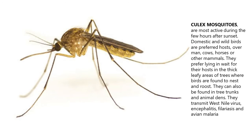Culex mosquitoes are most active during the few hours after sunset. Domestic and wild birds are preferred hosts over man, cows, horses, or other mammals. They prefer lying in wait for their hosts in the thick leafy areas of trees where birds are found to nest and roost. They can also be found in tree trunks and animal dens. They transmit West Nile virus, encephalitis, filariasis, and avian malaria.